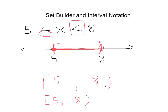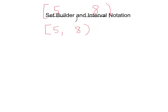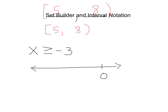Now we're going to look at what happens when it's an unbounded interval — that is when it goes off in a direction and doesn't have an ending point. For example, x is greater than or equal to negative 3. If we look at this on a number line, putting 0 as a point of reference, negative 3 is to the left of that. All the numbers greater than negative 3 would be everything to the right of negative 3. We see the equal sign, so it includes negative 3.